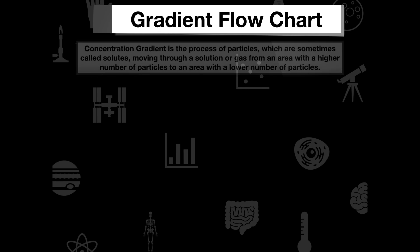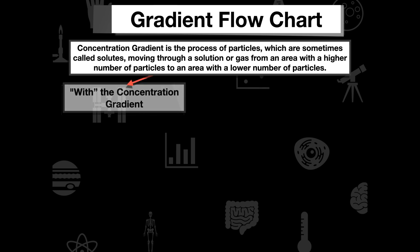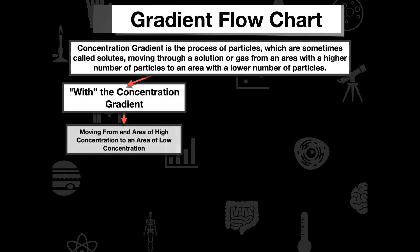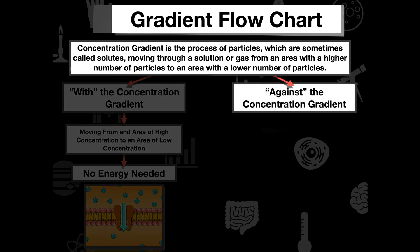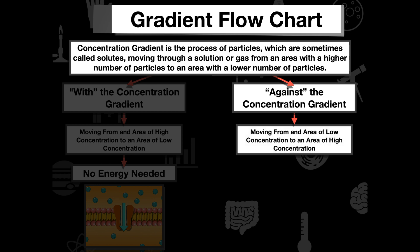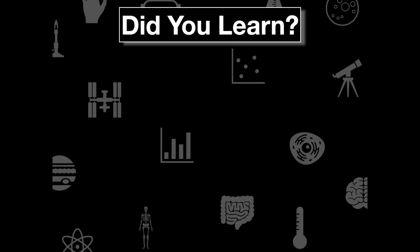Let's piece this all together. Concentration gradient describes where particles move — from an area of higher concentration to an area of lower concentration. Moving with the concentration gradient means molecules naturally diffuse into or out of the cell, and no energy is needed. Moving against the concentration gradient means going from low concentration to high concentration — molecules won't naturally diffuse that way, and energy is required to pump against the gradient. We call this active transport.